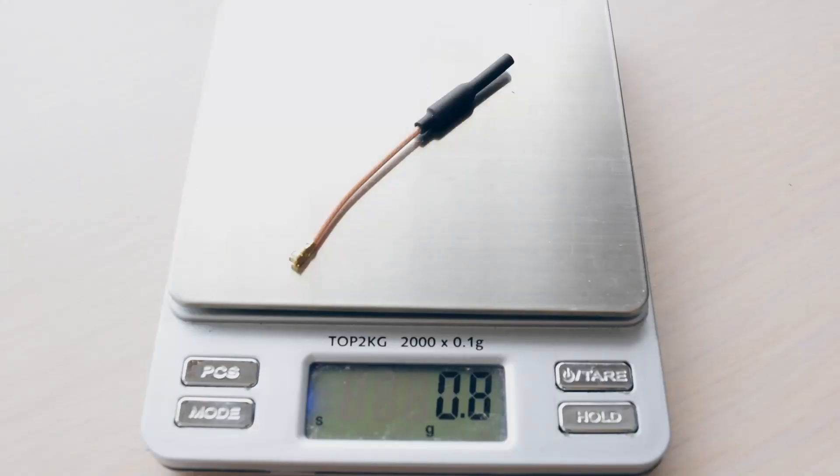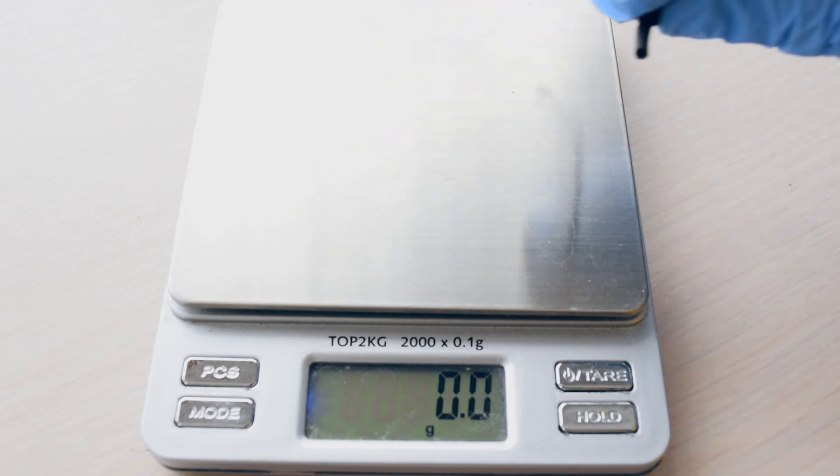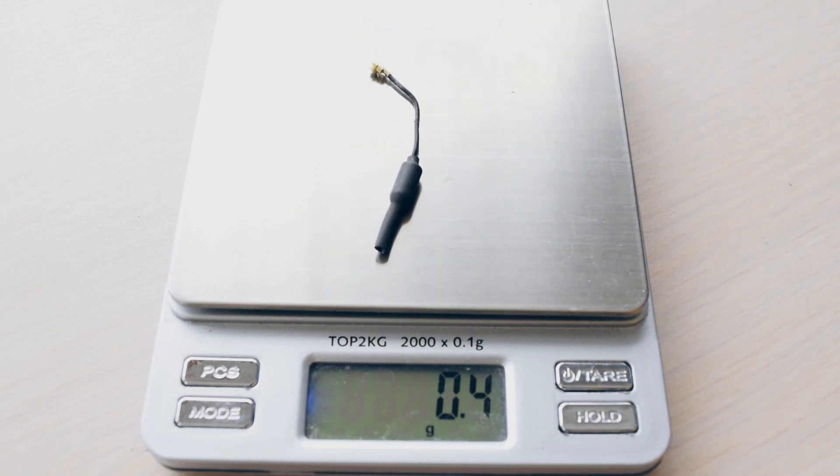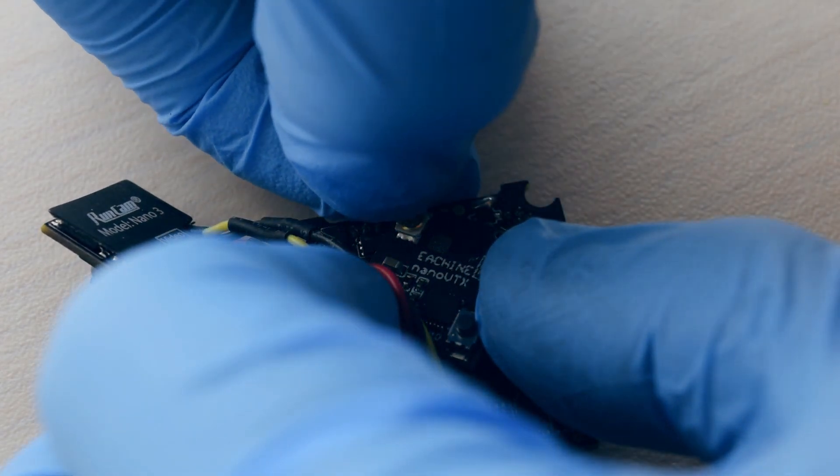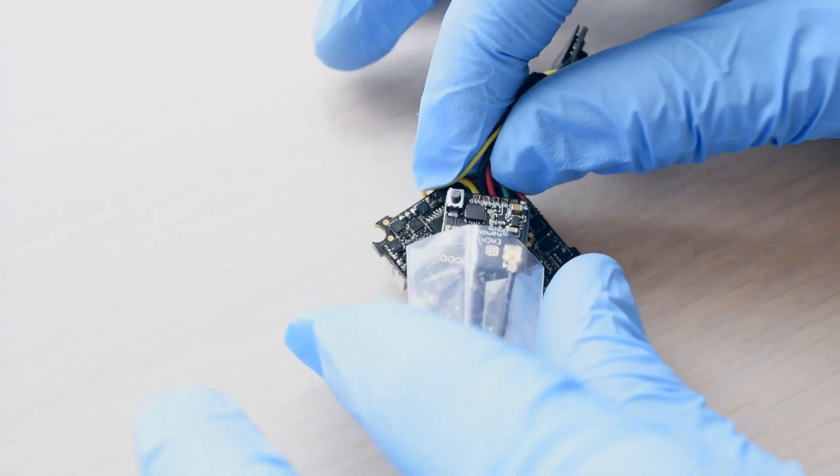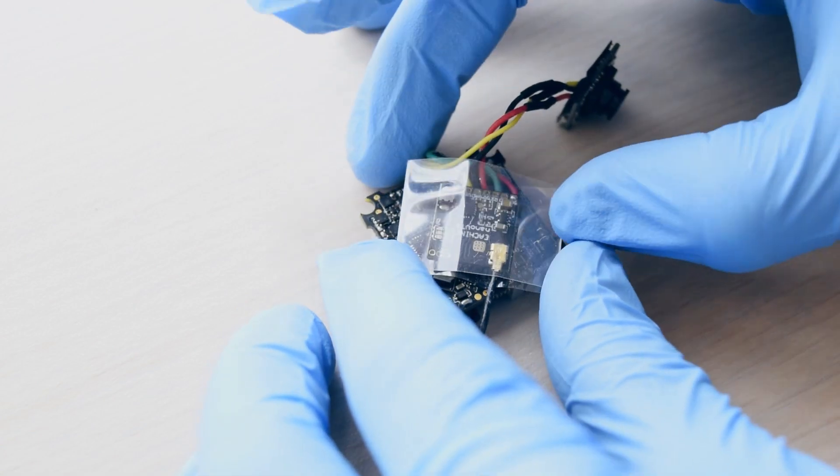The antenna that came with the VTX looks like this, but I found this smaller one laying around, so I think I'll use this instead. To attach it, you just push it down until it snaps into place. Now would be a good time to slide some heat shrink over the VTX and shrink it down.